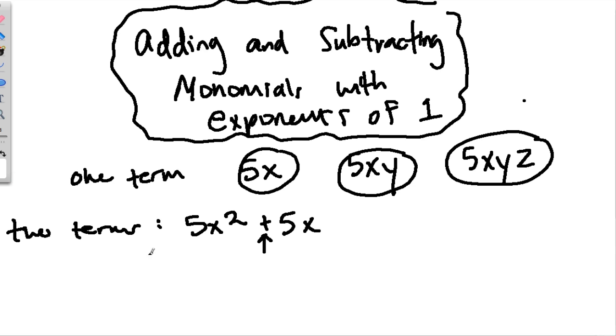What do these terms mean? 5x means 5 times x. In algebra, numbers and letters next to each other mean multiply. What about 5xy? This means 5 times x times y. So, numbers and letters, this all means multiplication. Same thing here. This means 5 times x times y times z. We call that one term in math.